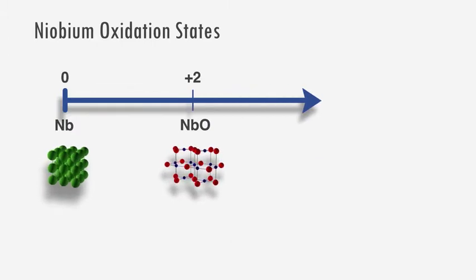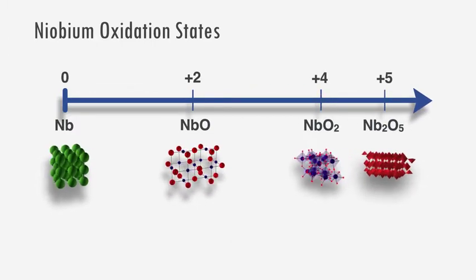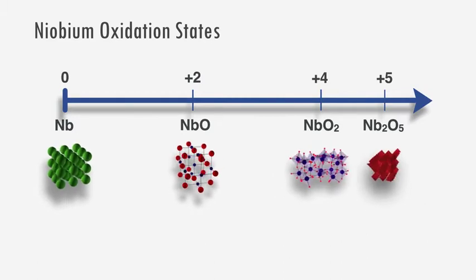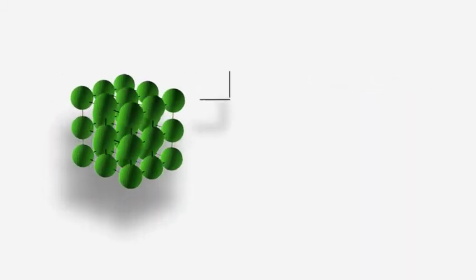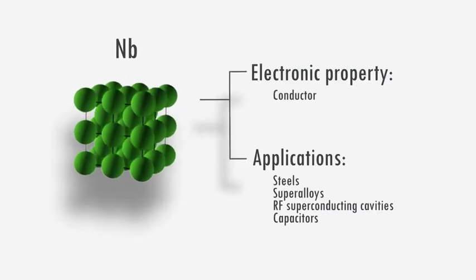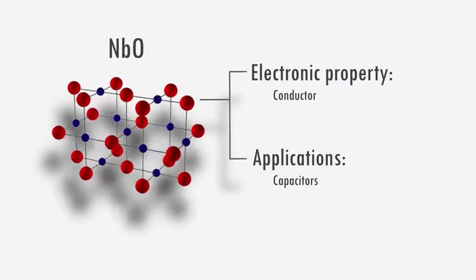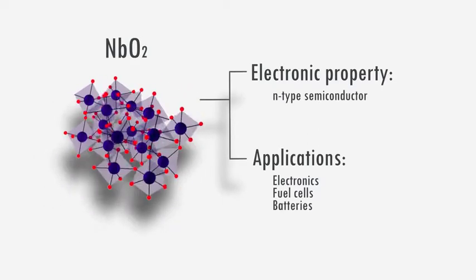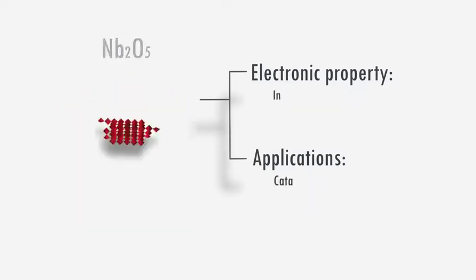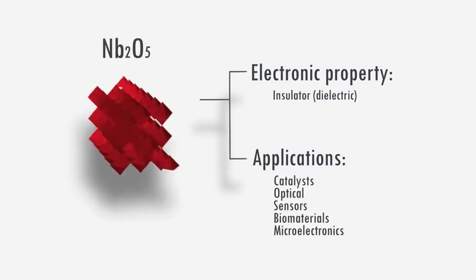Niobium is extremely versatile because of its redox chemistry having a range of oxidation states up to plus five. The oxides have different structures and electronic properties enabling their strengths to be harnessed in a range of materials. This is particularly advantageous in energy-related applications.